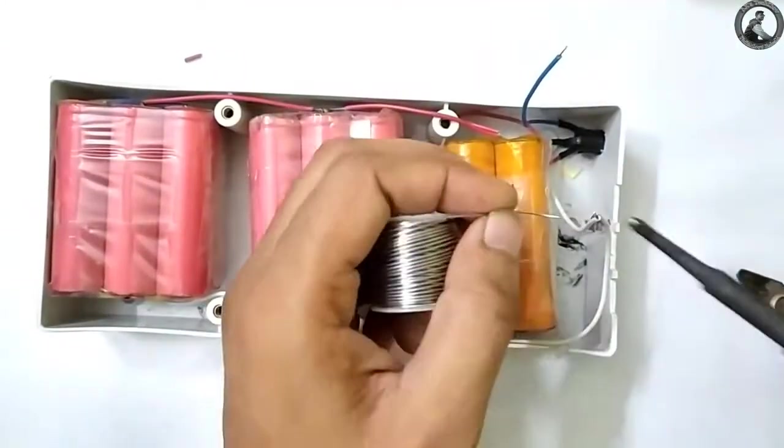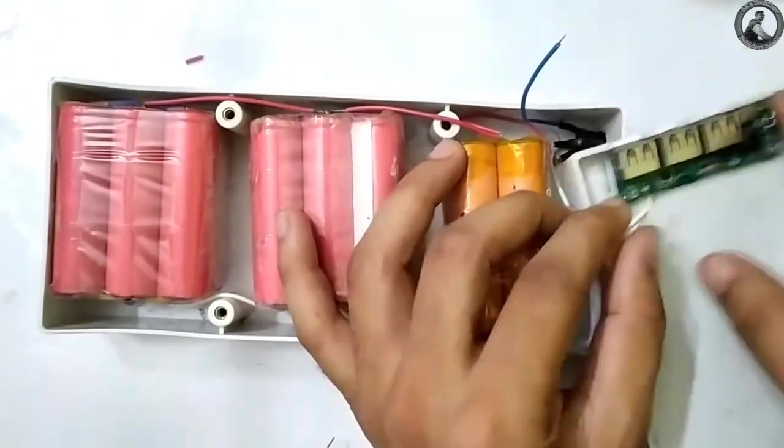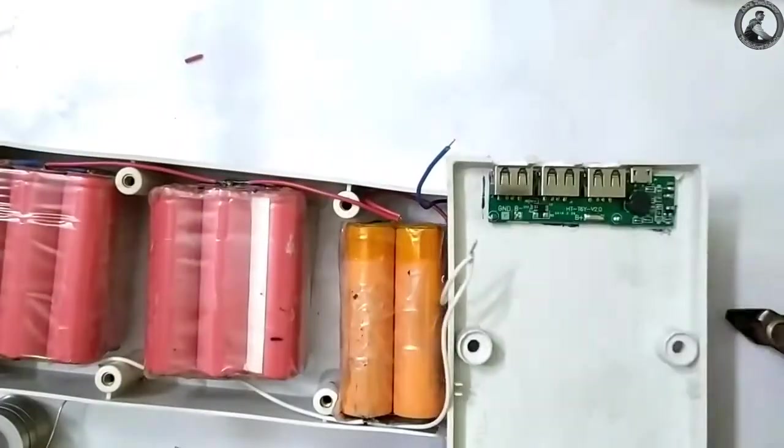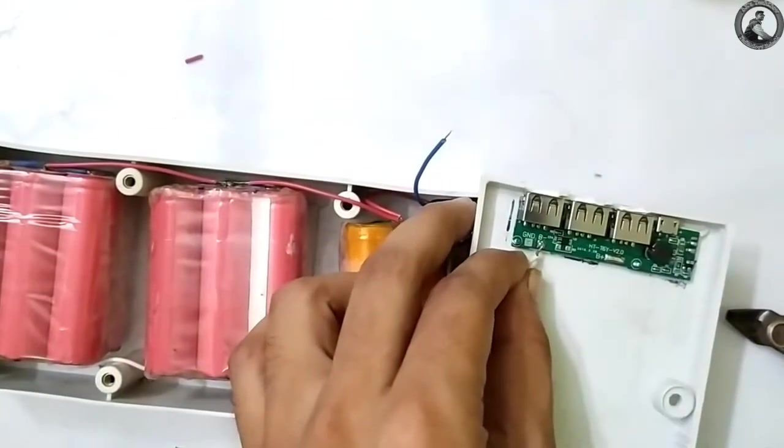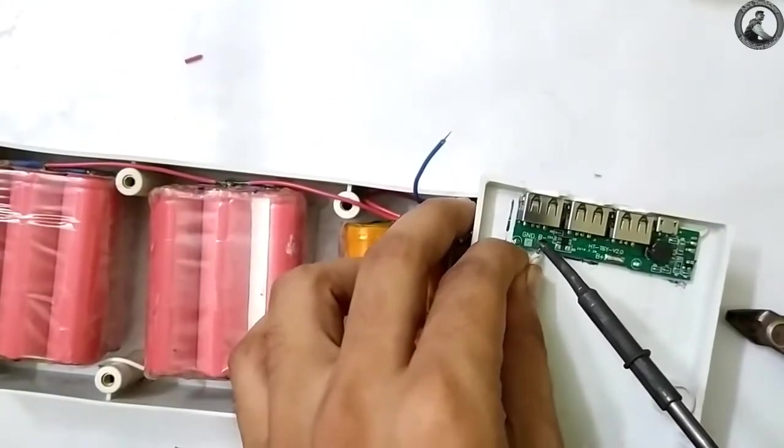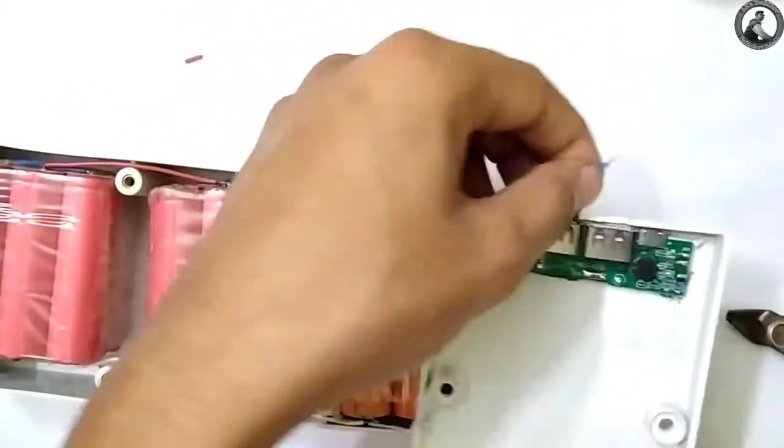Last and most important connection is to solder the negative and positive terminals to the power bank circuit, and that being done, my extra capacity power bank is now completely ready.